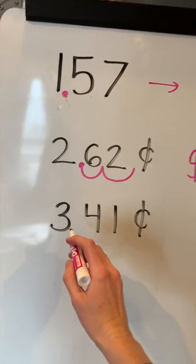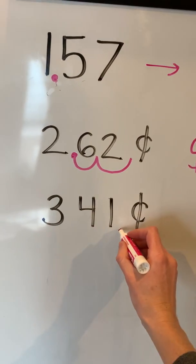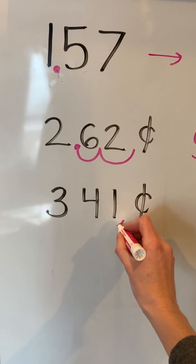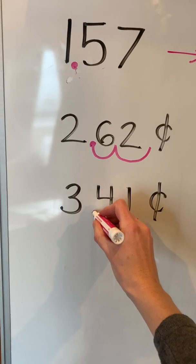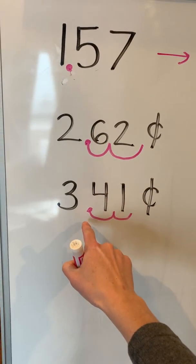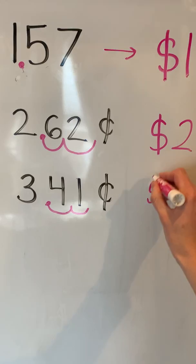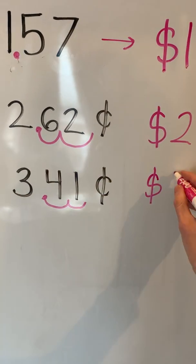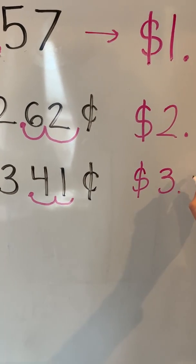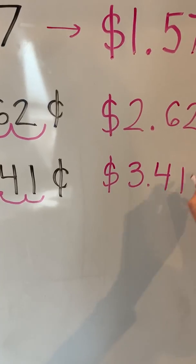Let's try again. 341 cents, find the end of the number, jump over one, two, your new decimal point is here. Now we get to go dollar sign, three dollars, and 41 cents.